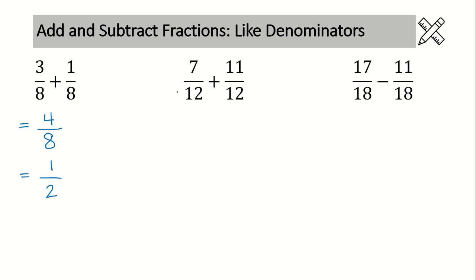Alright, let's take a look at example number 2. We have like denominators. So we're going to work down the page. We put our fraction bar first, right in your denominator of 12, and then just add up your numerators. 7 plus 11 is 18.